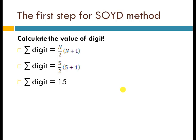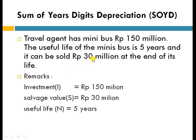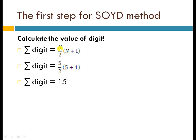To calculate the SOYD, you have to estimate the sigma digit value. The sigma digit can be obtained using this formula: N times (N plus 1) divided by 2, where N represents the useful life. In this case, the minibus will last five years, so N equals 5: 5 times (5 plus 1) divided by 2, which results in 15. So the sigma digit is 15.